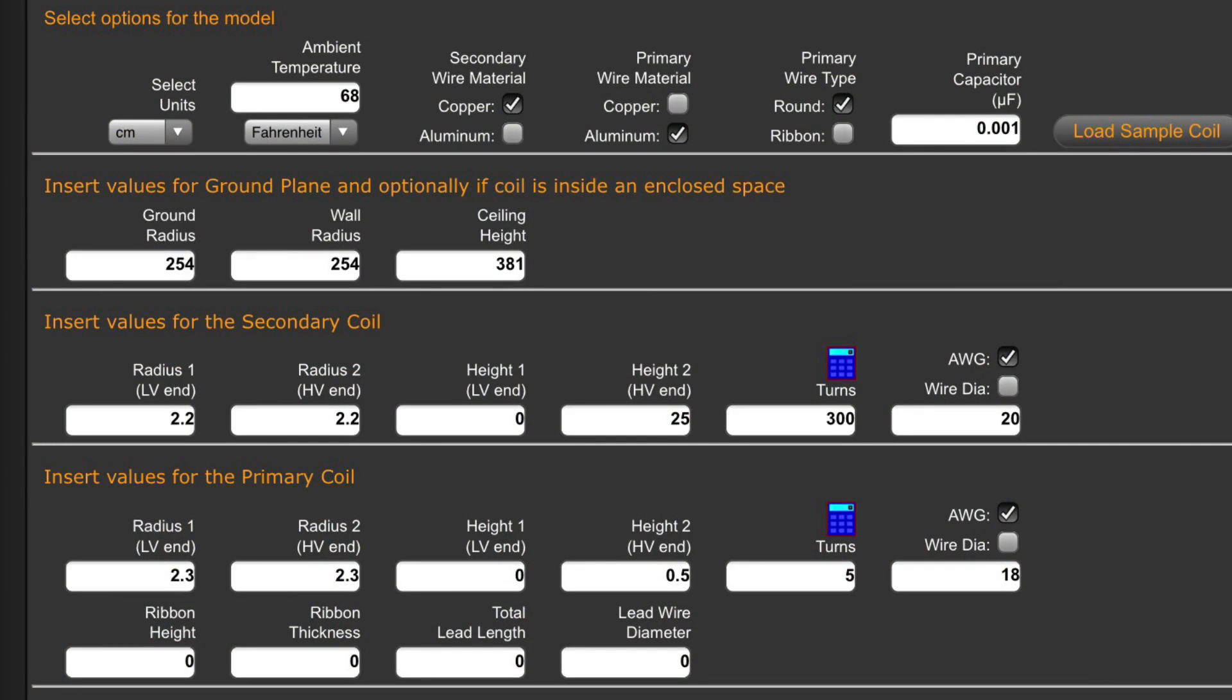This is a screenshot of Java TC. In the top left corner we've chosen the units we want to use for this Tesla coil. We've chosen centimeters and Fahrenheit for temperature. In the top right we have the capacitance. However, for this Tesla coil we're actually not going to use any capacitors because we don't need any and it makes it simpler not to use any.